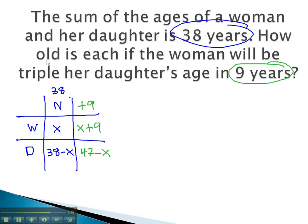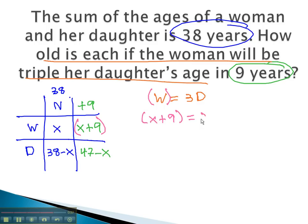Next, we make an equation for the future. The woman will be triple her daughter's age, 3 times her daughter's age. Replacing the woman with her future value, x plus 9, equals 3d, the daughter, 47 minus x.